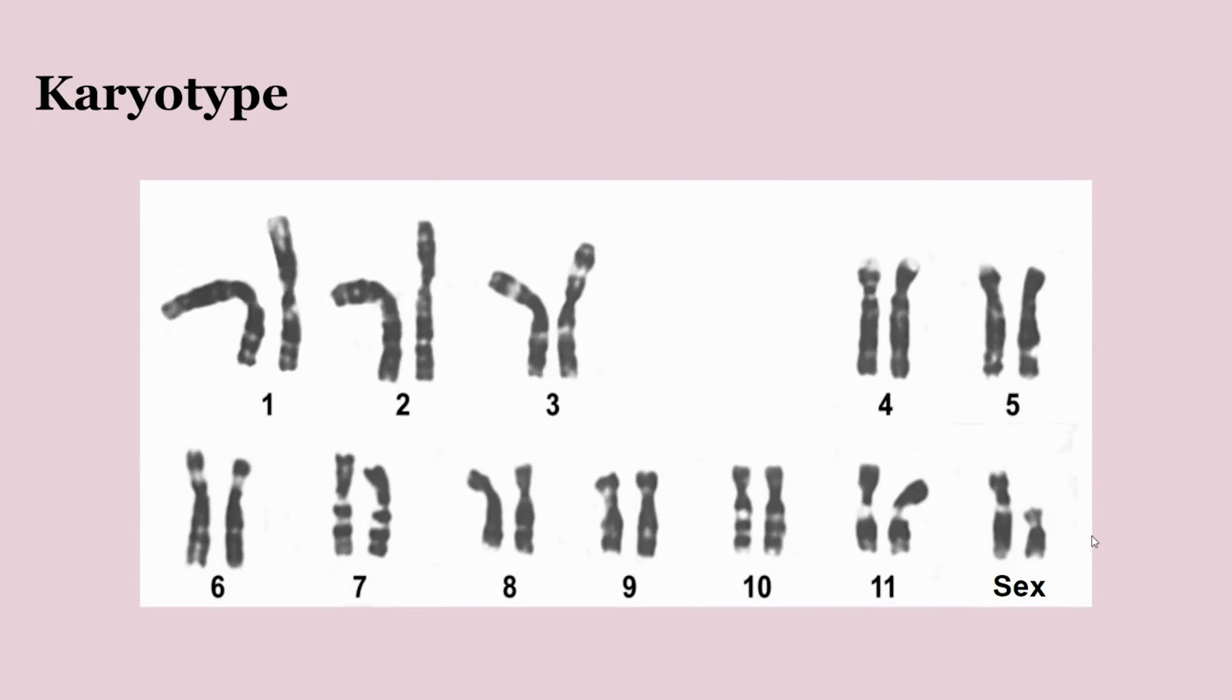This is a karyotype. Karyotypes are visual images of the stained chromosomes from a cell. These can be taken both from before or after S phase, so sometimes you will see karyotypes with sister chromatids. Chromosomes are ordered by size, ending with the sex chromosomes.